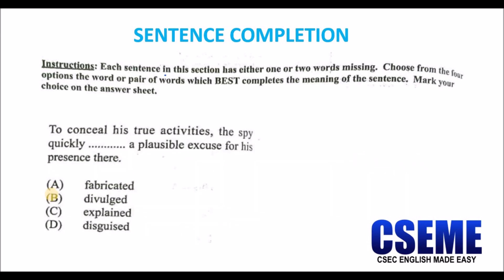Let's look at the third question: 'To conceal his true activities, the spy quickly ___ a plausible excuse for his presence there.' The options are: A. fabricated, B. divulged, C. explained, D. disguised. Remember, the spy is concealing his intent. I think this one is a giveaway — the answer is A, fabricated. You are brilliant! I would also recommend making a note of these vocabulary options and familiarizing yourself with their meanings, because you might see the word 'fabricate' again.